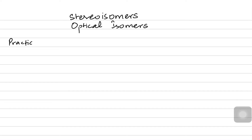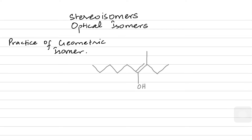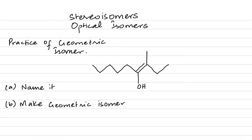But before that, we will practice a question for geometrical isomers so that it helps for our revision. Imagine I'm giving you a structure which looks like this — this is the skeletal formula. First, name it and then make the geometrical isomer.